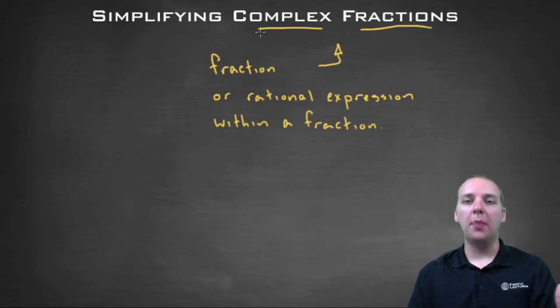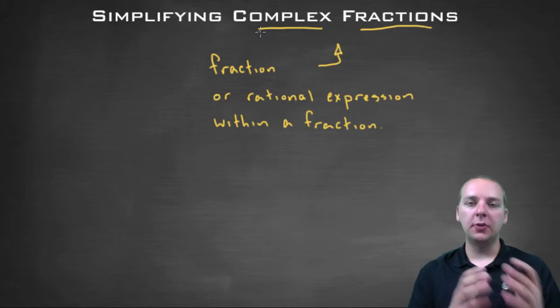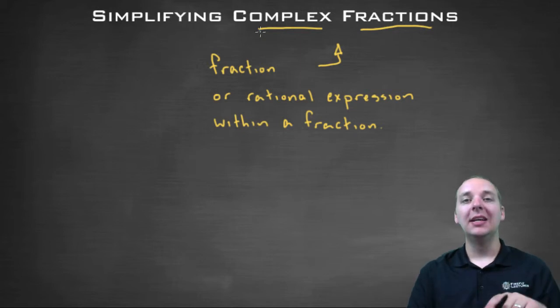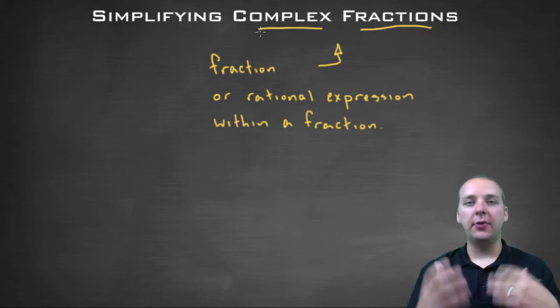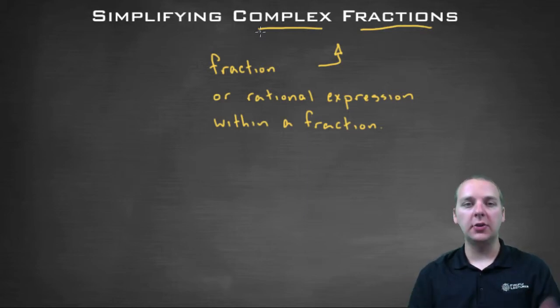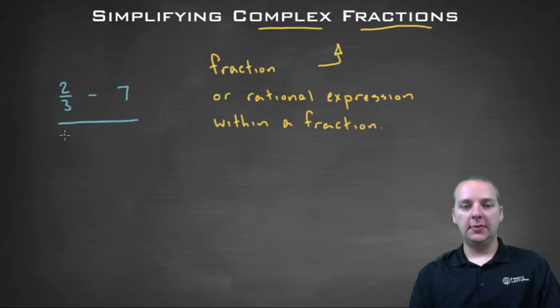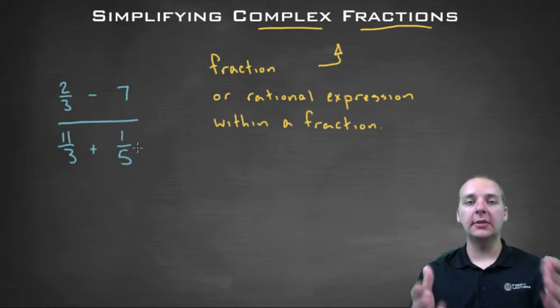Basically, in plain English, a complex fraction is a fraction or rational expression that has more fractions or rational expressions within the numerator or denominator. They're like fractions within fractions. Here, I'll show you a couple examples. These can have numbers or variables. Here's a simple numbers example: two-thirds minus seven over eleven-thirds plus one-fifth. This would be an example of a complex fraction.